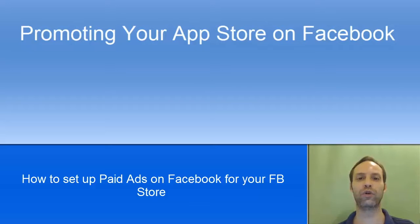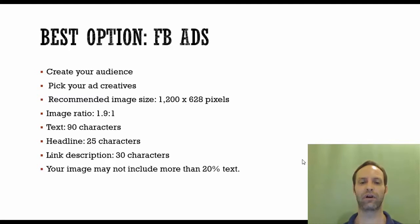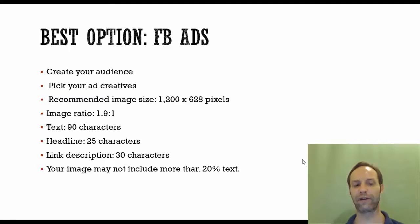First we're going to create an audience, then you are going to make your ad creatives. The recommended size for your ad creatives is 1200 by 628, and if you have someone design it for you, you can tell them the image ratio is 1.9 to 1. Text is 90 characters, headline 25 characters, and link description 30 characters.